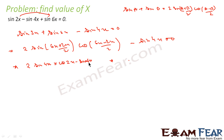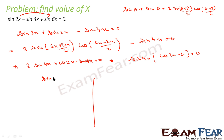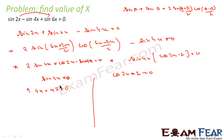Taking sin 4x common, we get sin 4x (2 cos 2x − 1) = 0. So we have two options: either sin 4x = 0, or 2 cos 2x − 1 = 0. Taking equation 1, sin 4x = 0 gives 4x = nπ, so the general solution is x = nπ/4.